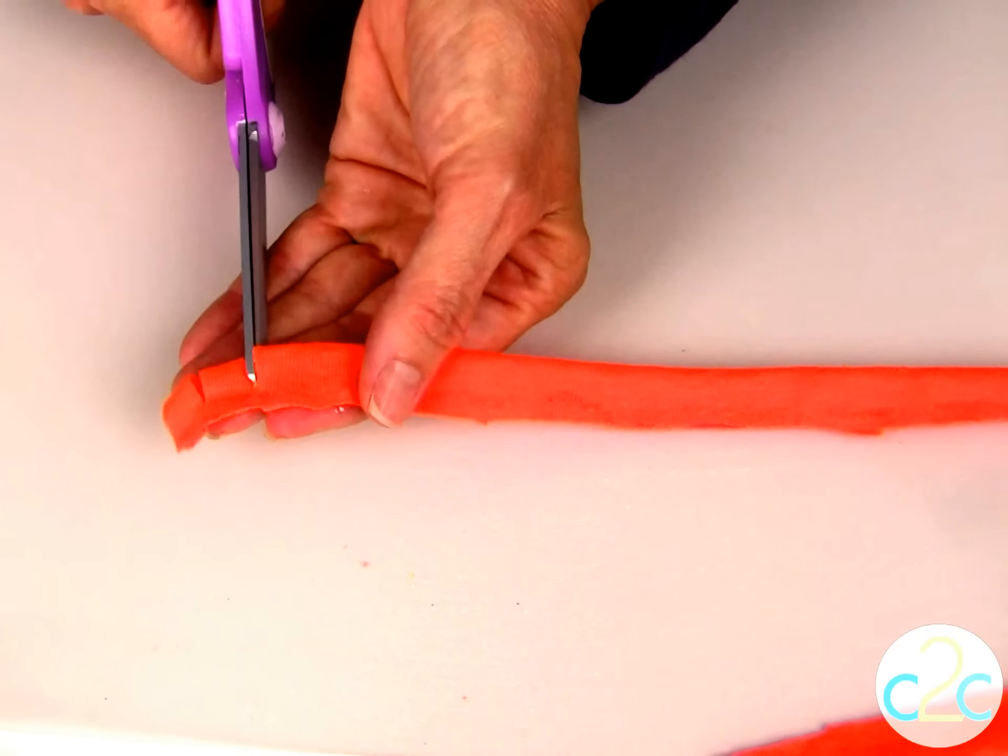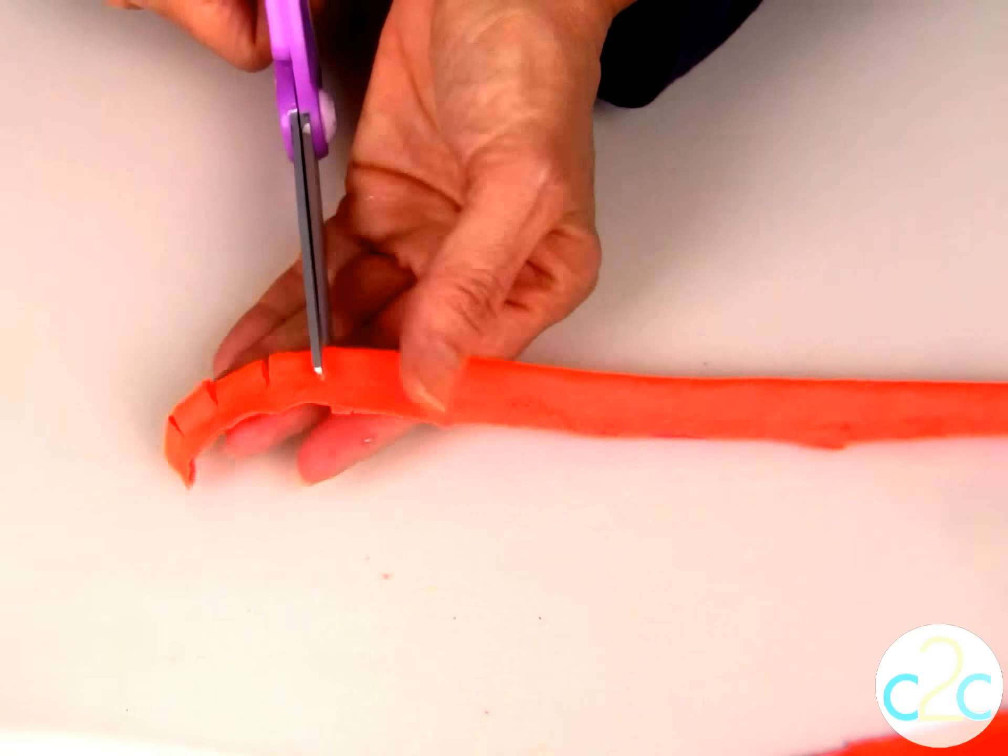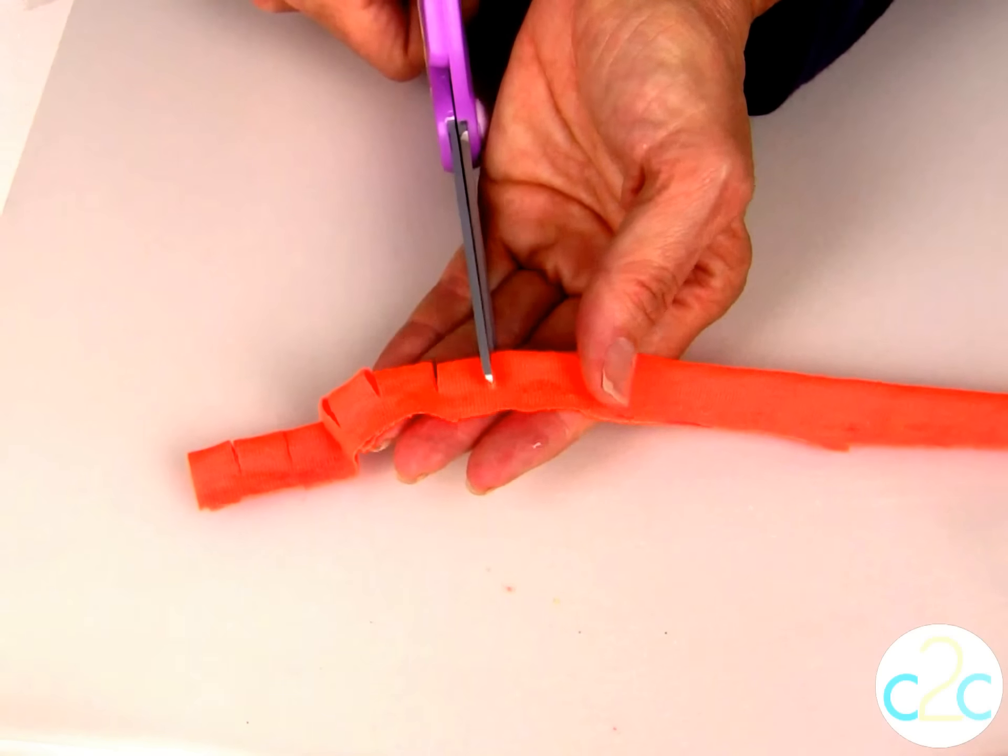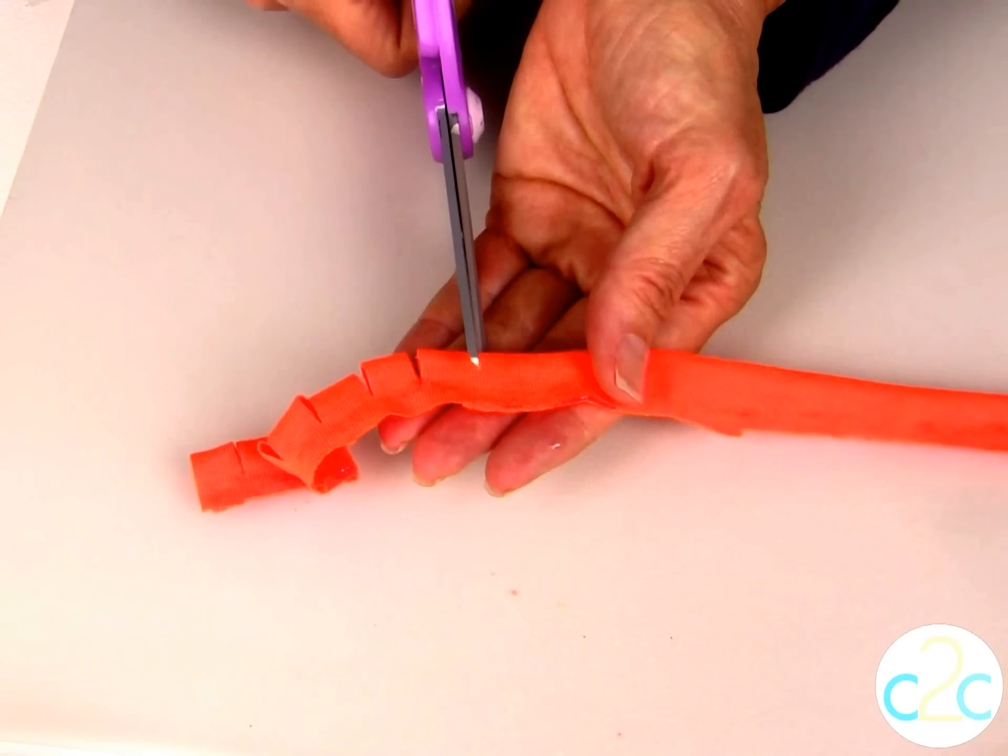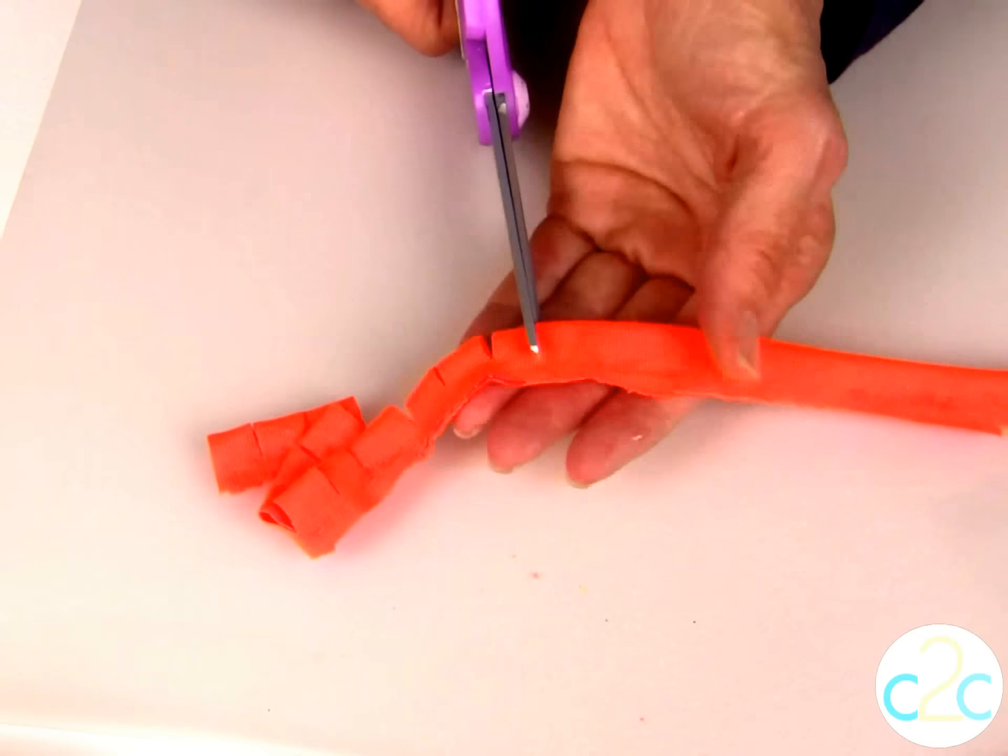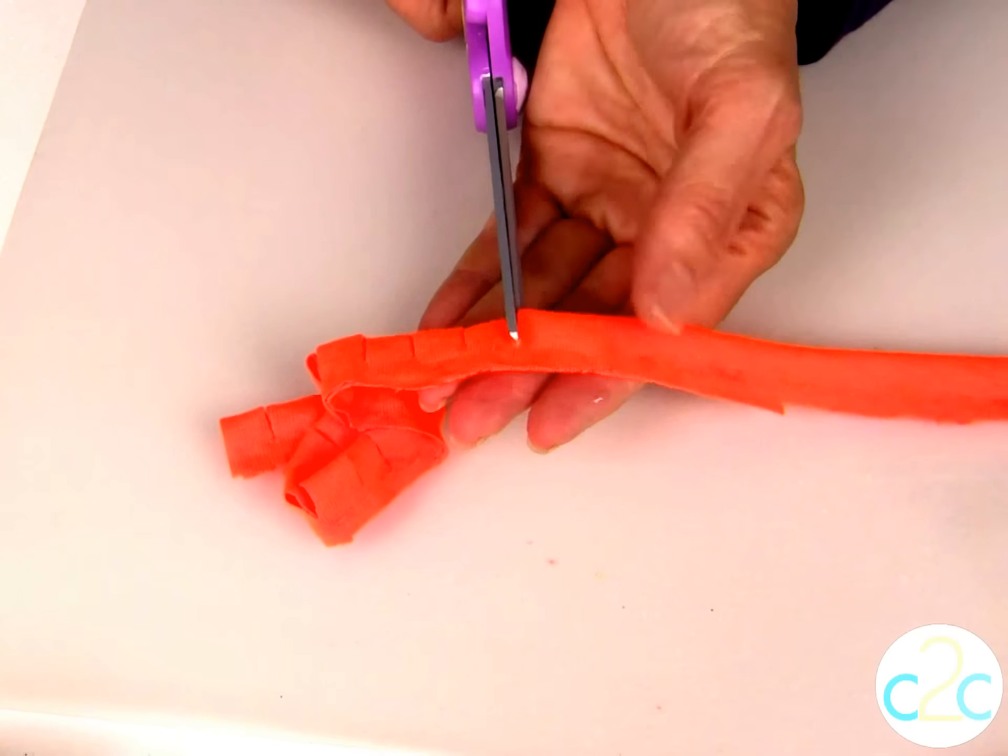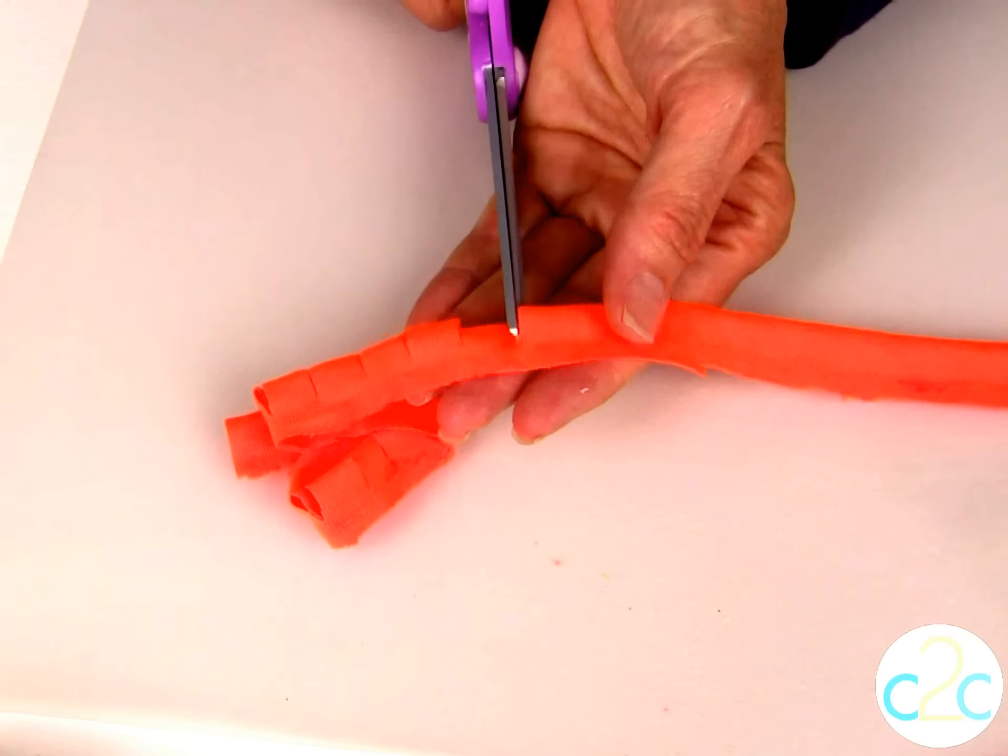So you can decide how far apart you want these slits. You can put them closer together. It gives you a totally different effect depending on how you want to cut that fabric strip. Keep cutting until you've cut slits all the way down your strip of fabric.